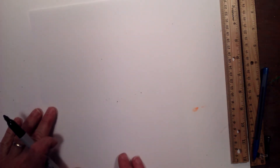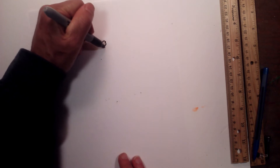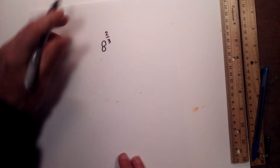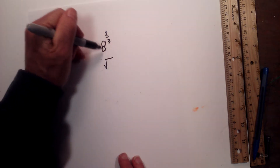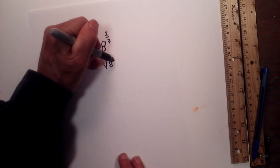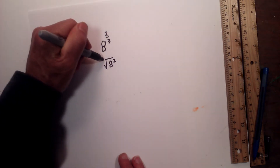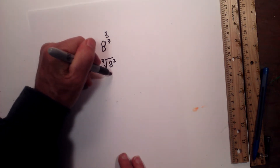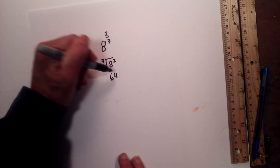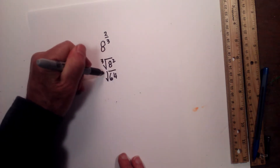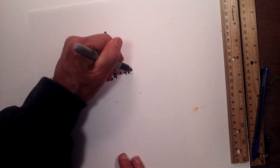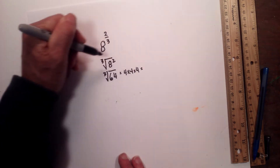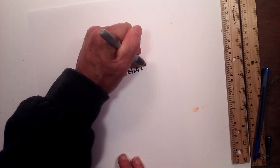Sometimes you may get an exponent like this — 8 to the 2/3. So what do we do with this? First, let's write a radical symbol. The power is 2, so we have 8 to the second power with a root index of 3. 8 to the second power is 8 times 8, which is 64. What number multiplied by itself 3 times is equal to 64? That is 4 times 4 is 16, times 4 is equal to 64.